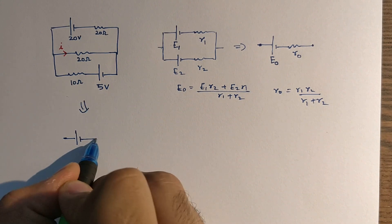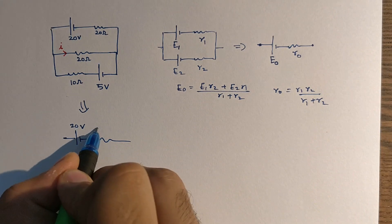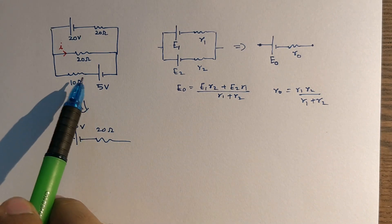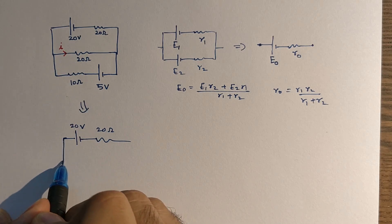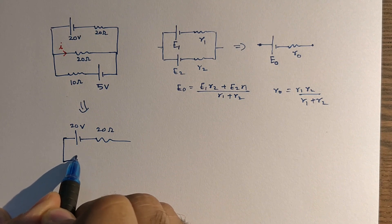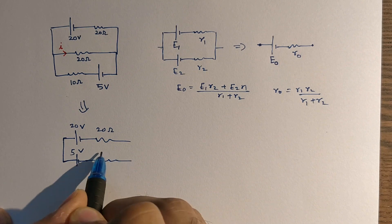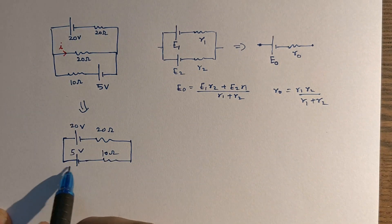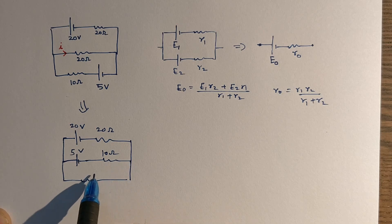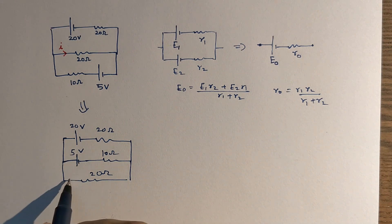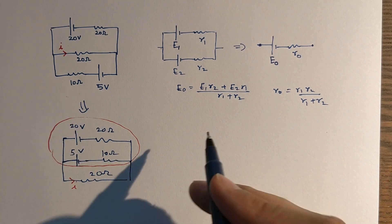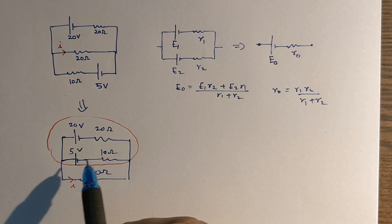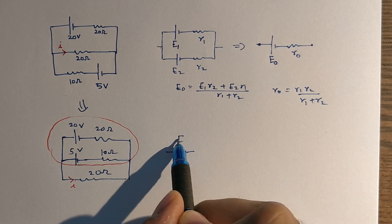I can redraw this diagram for better understanding. I'll write it as: 20 volts with 20 ohms, and I can exchange the two branches — it won't make any difference but will look a little nicer. So this will be 5 volts with 10 ohms, and the third branch will be 20 ohms. I want the current in this third branch, so I can say these two batteries are connected in parallel.